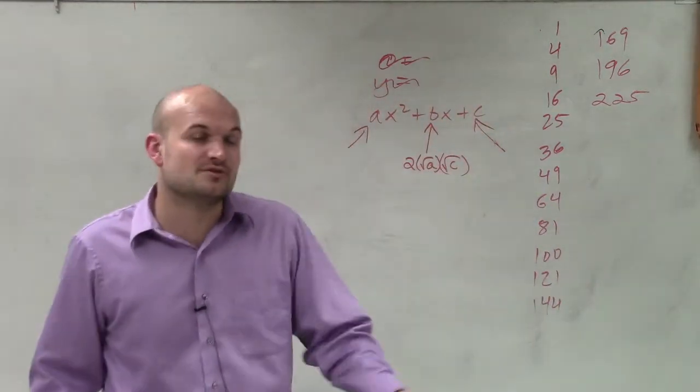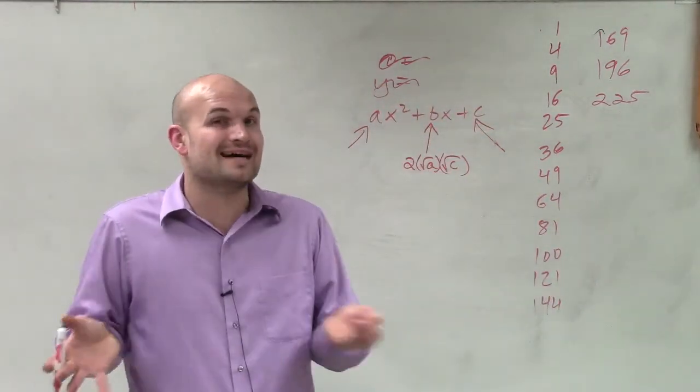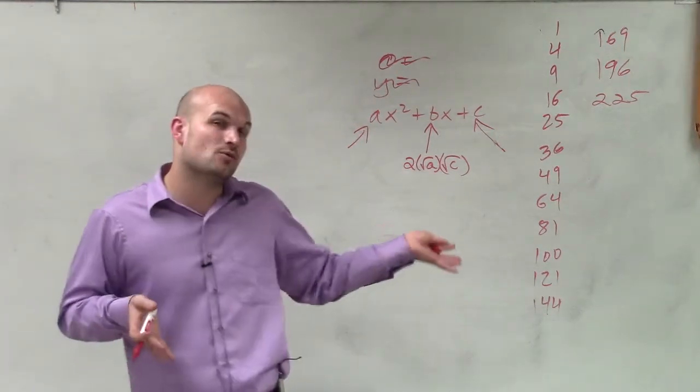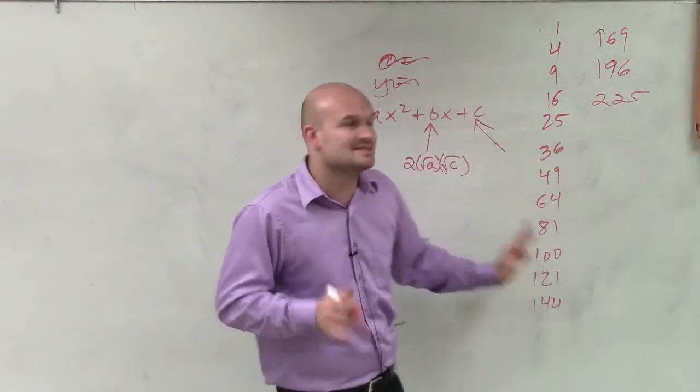So those are some common numbers. And if you see those numbers in there, then you know it could possibly be a perfect square trinomial. Even if they're in fractional form, we can still work with them as a perfect square trinomial. But you're going to want to see these numbers.